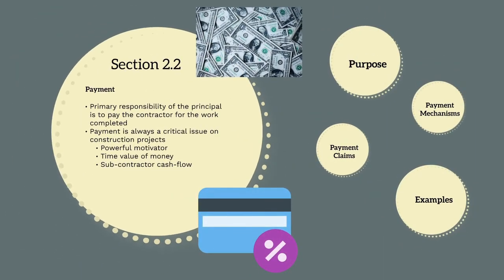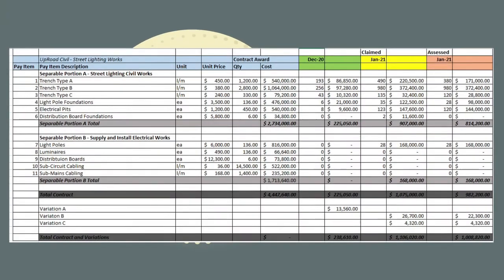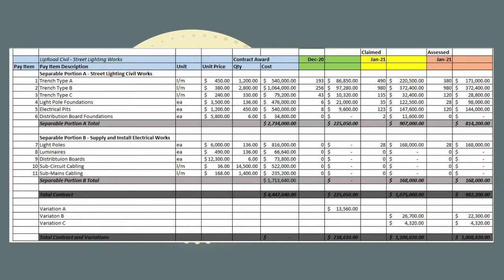Let's finish our section on payment by going through an example of a progress claim. This is an example of a payment claim from an imaginary street lighting subcontractor called Uprod Civil. Uprod Civil have been engaged to complete the civil and electrical works associated with a new street lighting system by us, the head contractor, on a major road project.